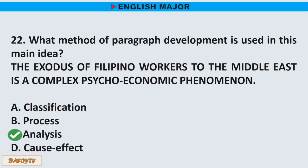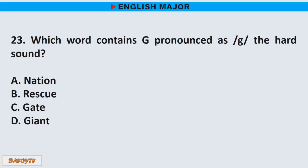Question number 23. Which word contains G pronounced as the hard sound? A. Nation. B. Rescue. C. Gate. D. Giant. The correct answer is letter C. Gate.